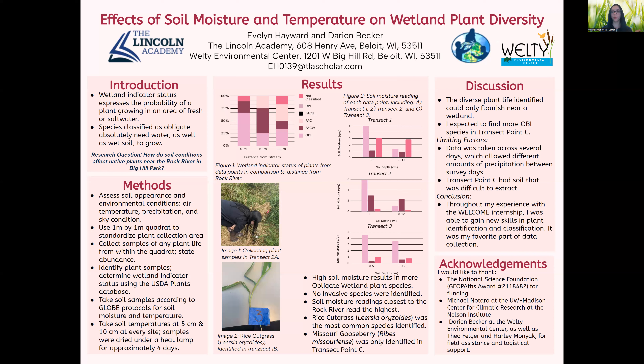Obligate plants almost always occur in a wetland and they cannot thrive anywhere else — they rely on the extremely moist soil. Alternately, species considered as upland almost never occur in wetlands and do not rely on any special conditions held within a wetland. After learning these classifications, my research question arose.